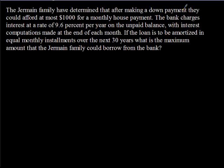Our second problem reads: The Germain family have decided that after making a down payment, they could afford at most $1,000 for a monthly payment. The bank charges interest at 9.6% per year on the unpaid balance, with interest computations made at the end of each month. If the loan is to be amortized in equal monthly installments over 30 years, what is the maximum amount the Germain family could borrow? This problem is similar to the last one, except instead of finding R, we are now finding P.